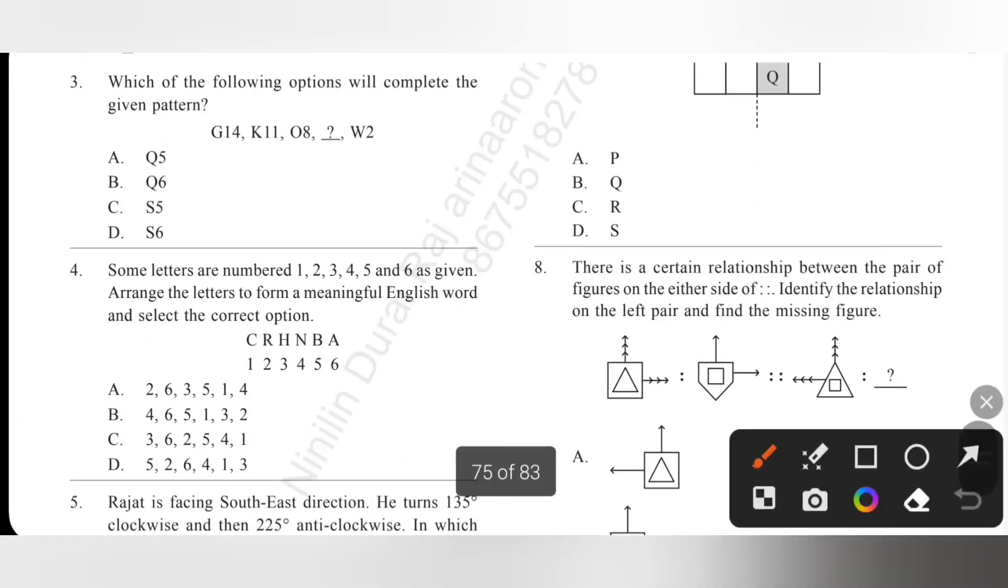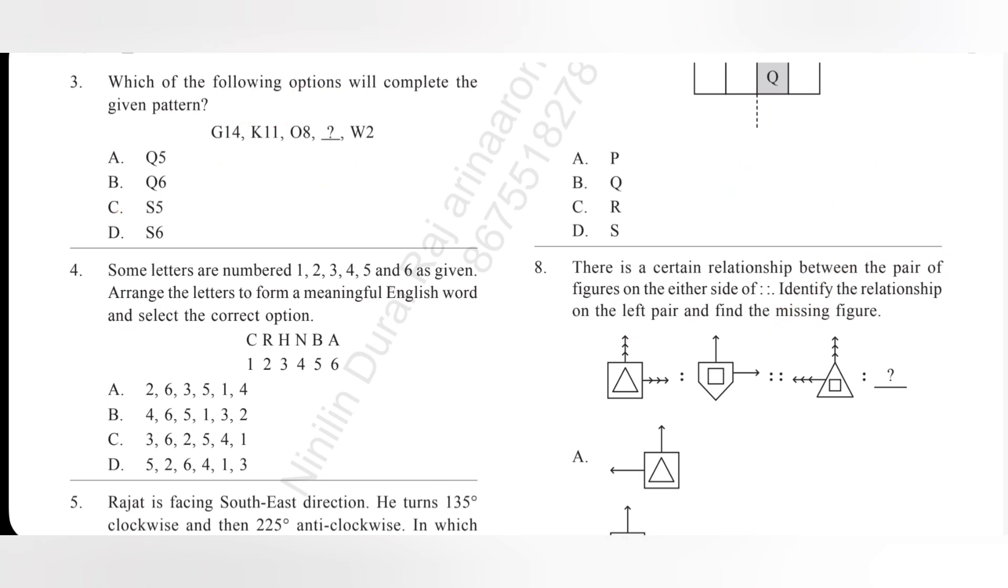Third one, which of the following options will complete the given pattern? Please pause the video and check the given pattern. So 8 plus 3 is 11, 11 plus 3 is 14. Here the second number is 5, 5 plus 3 is 8 and 2 plus 3 is 5. Then check the first part, G then K, so G plus 4 is K. Then K plus 4 is O. So O plus 4 is S. So first letter is S. Option C is the correct answer.